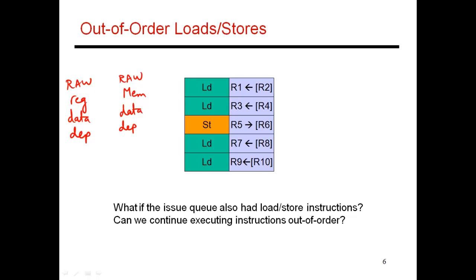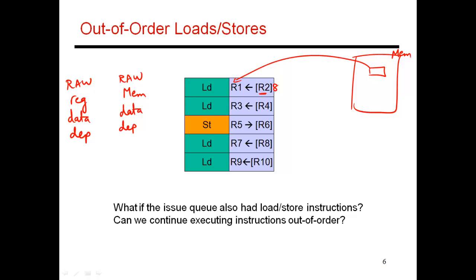In this example, you have your main memory. This load is fetching a value from a given memory location - the address of that location is stored in register R2. You could do something more complex, such as adding an offset of 8 to that register value to get the address, then bring in a value and put it into register R1. Similarly, all other loads and stores have register input operands that allow them to compute the effective address, and then there's a data exchange between memory and registers.